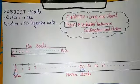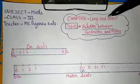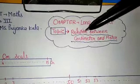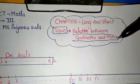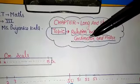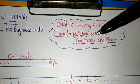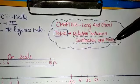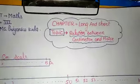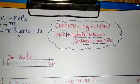Good morning dear students. Today in our Maths, which is the fourth chapter — Long and Short — I have brought the topic of the relationship between centimeter and meter. You all know that in measuring or in length, I explained all of you about centimeter, and after that I explained you about meter. This means centimeter is like a small brother and meter is the big brother. So today we are going to talk about that relationship.